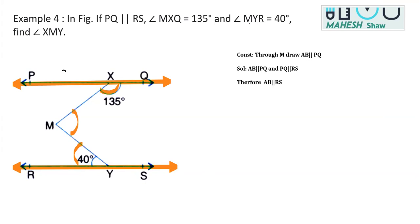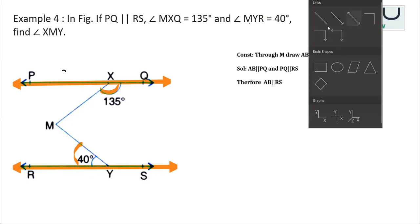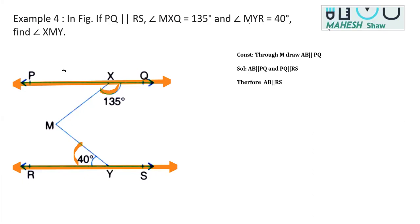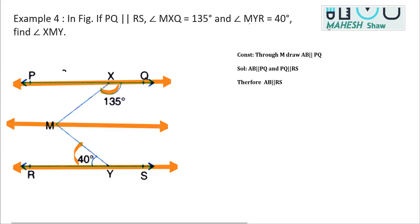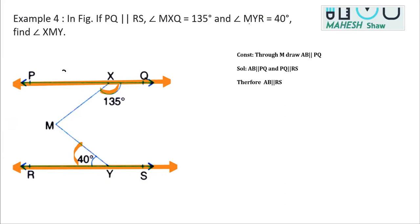Now, as you can see from the figure, whenever there are two parallel lines, there is always a transversal that is needed in order to use the properties of parallel lines like co-interior angles, alternate angles, and corresponding angles. Since we do not have this, we'll be making one transversal. First, we need to draw a line, and the line will be drawn in such a way that it is passing through M and is parallel to any of them, say AB or PQ.